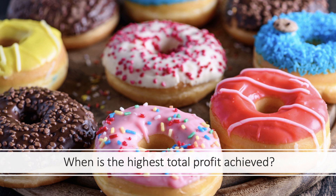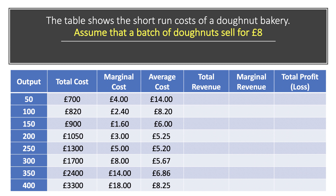The key question is: when is the highest total profit achieved? To find that out we need some data. Here is some hypothetical data showing the short run costs of a donut bakery. We're going to make a working assumption that a single batch of doughnuts sells for eight pounds per batch — the bakery can sell any number of batches at eight pounds per box and that price won't fall.